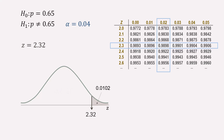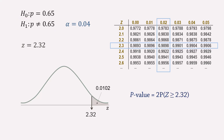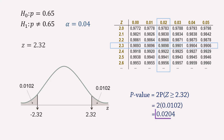Since this is a two-tailed test, the p-value is obtained by multiplying the one-tail area by 2 — that is, adding the corresponding lower tail area. Therefore, we have a p-value of 0.0204.